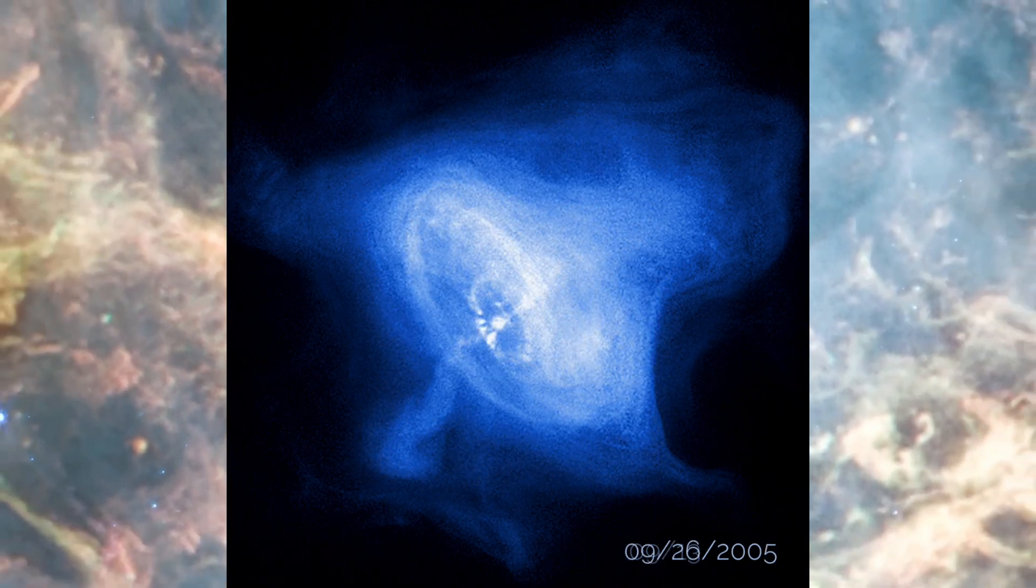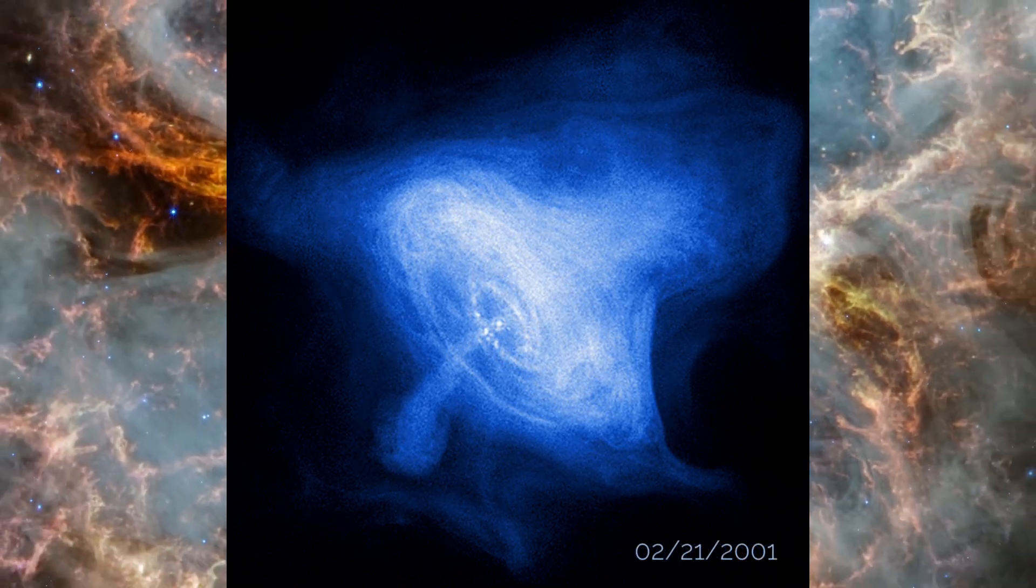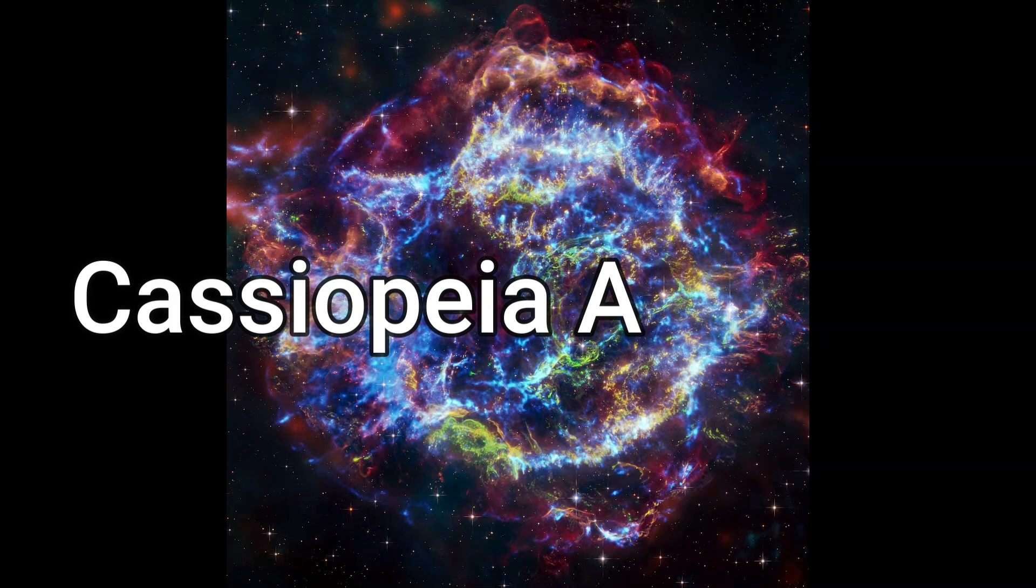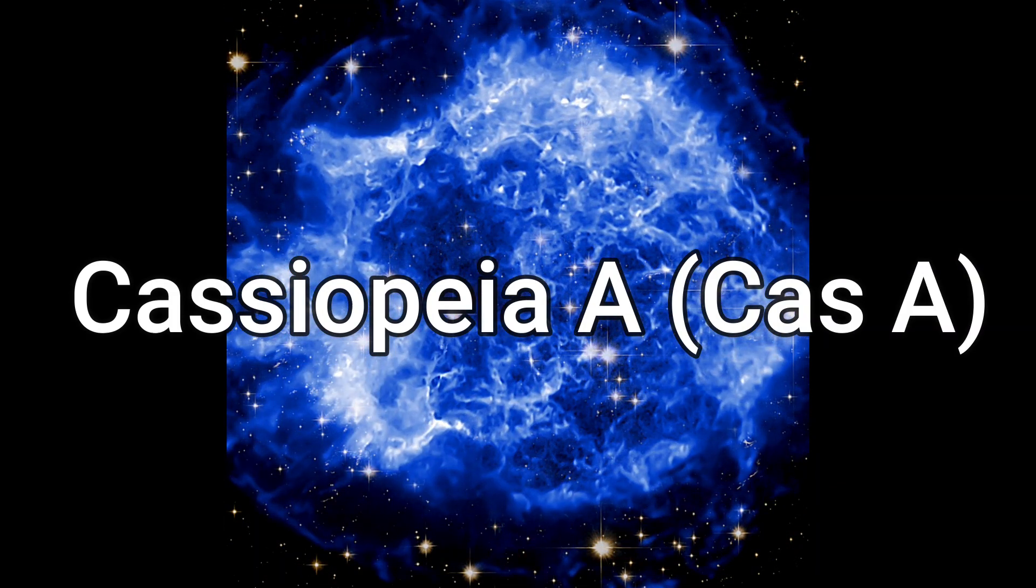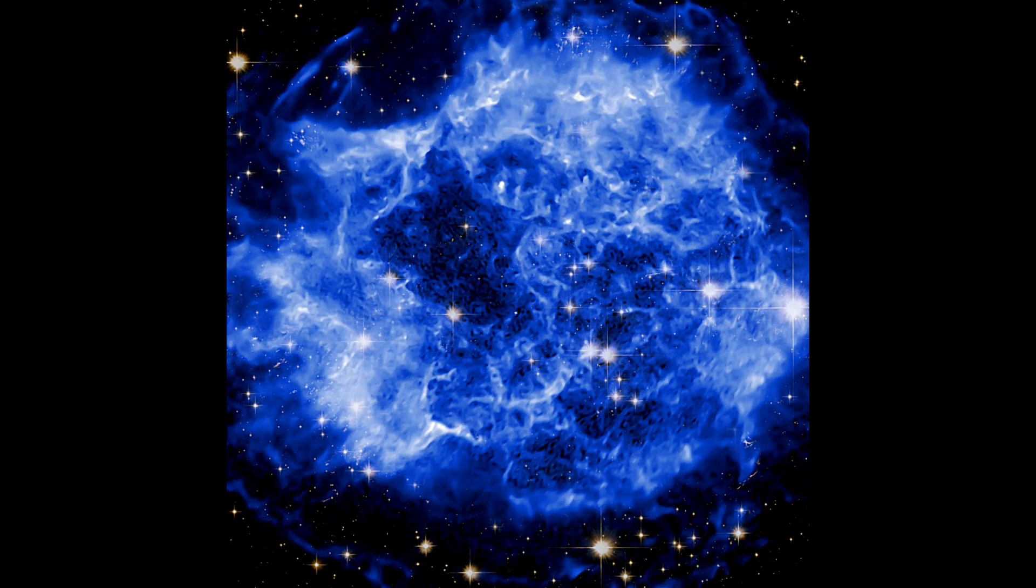Chandra will conduct new observations later this year to monitor changes in the jet since early 2022. The second remarkable feature is Cassiopeia A, Cass A, the remnants of a supernova that exploded about 340 years ago as seen from Earth.